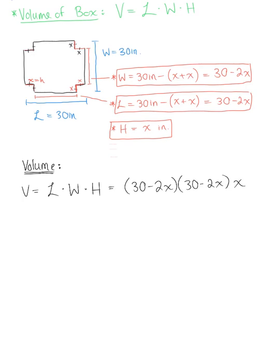We already have this written as a function of x. We just need to simplify. I'm going to start by foiling this region out. So we'll have 30 times 30, which is 900, minus 60x, minus 60x, and then negative 2x times negative 2x gives us plus 4x squared.